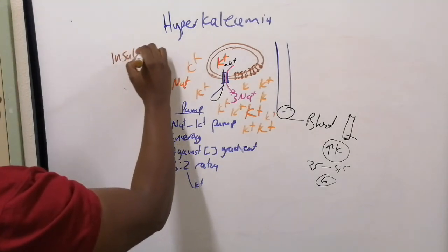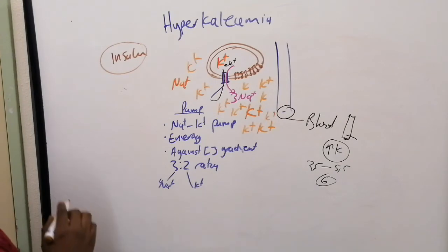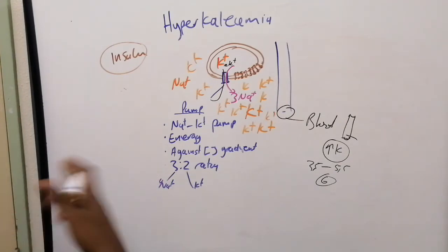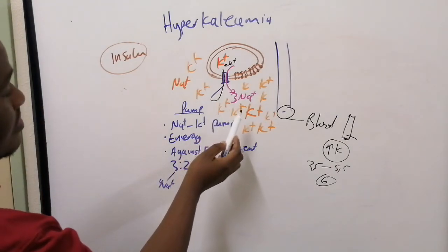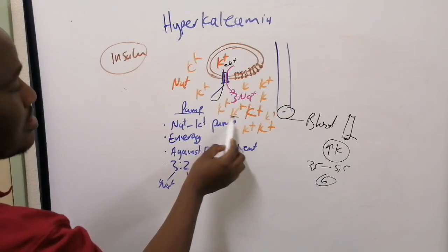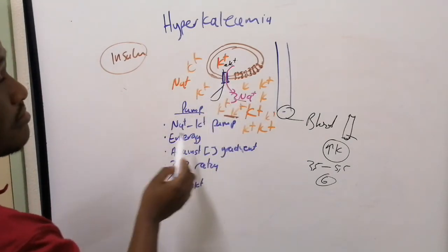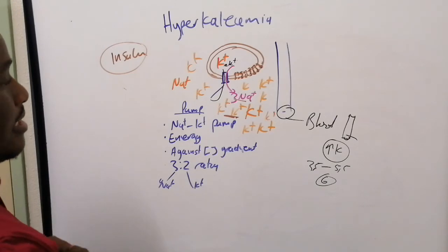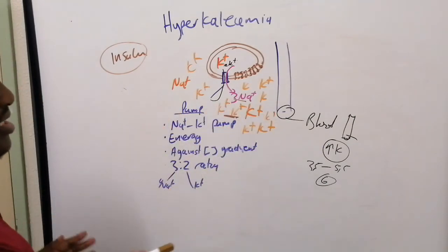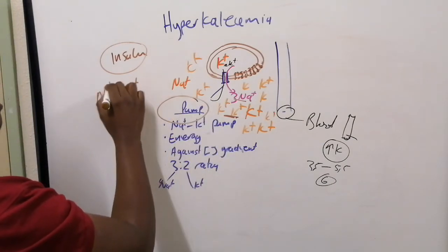So when you give your patient insulin, you actually stimulate this ATPase — this sodium-potassium ATPase. You are making it work faster and more efficiently. What it will do is take two potassium ions from the outside of the cell into the cell where potassium belongs, and take three sodium ions from inside the cell to the outside. It's going to try and correct this physiological pathology. So insulin will stimulate this sodium-potassium ATPase pump.